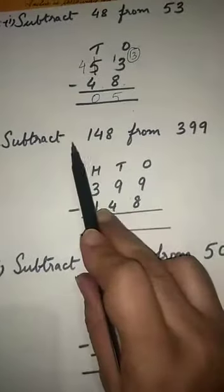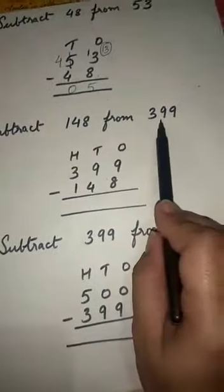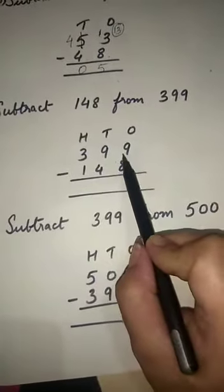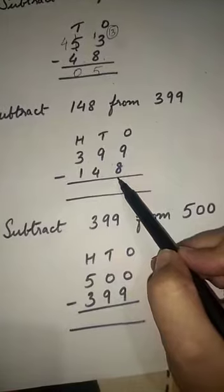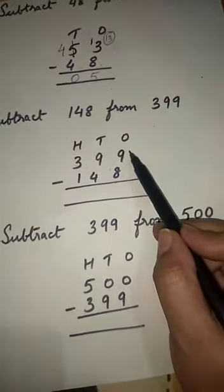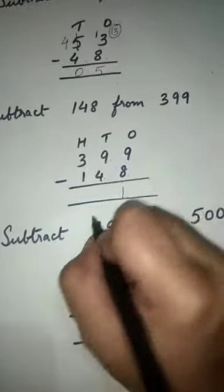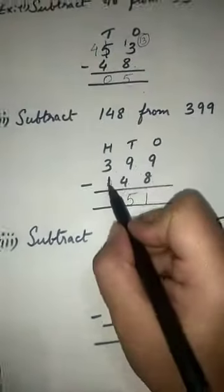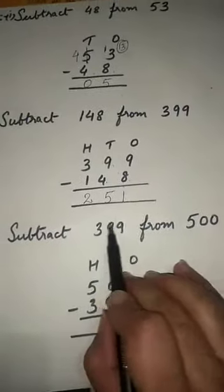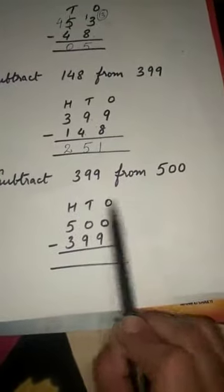Next, subtract 148 from 399. Here 399 is the bigger number, so we write 399 on top followed by 148. Now you can easily subtract 8 from 9 — as 9 is the bigger number — and we get 1. Then 9 minus 4 gives 5. Then 3 minus 1 gives 2. So the answer is 251.